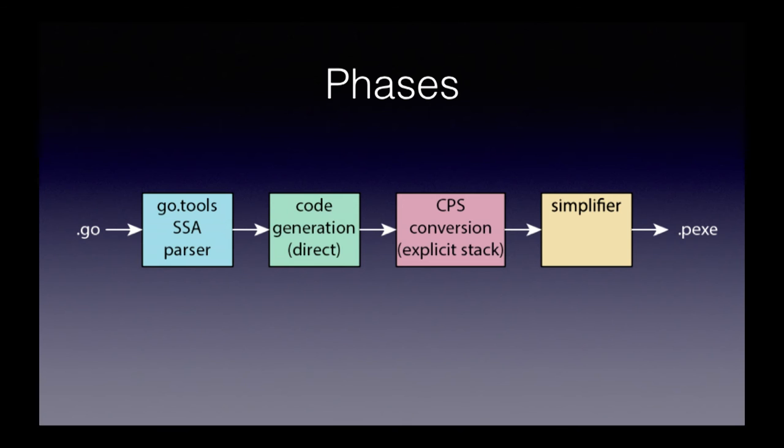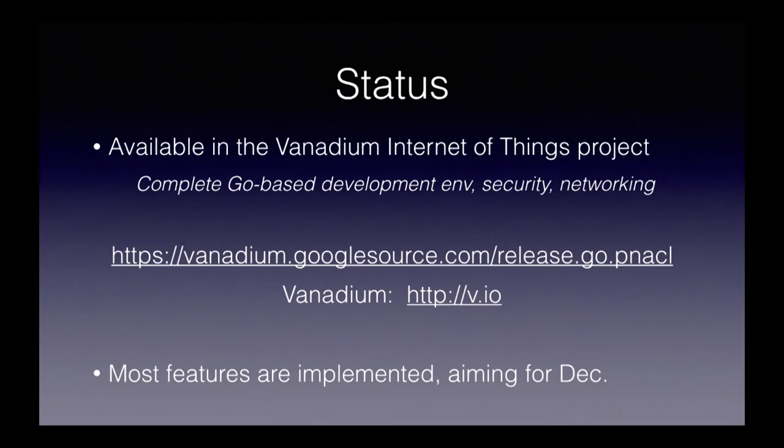The phases of our compiler are like this: we use the SSA GoTools SSA parser to parse the program, generate the code in direct style, then perform a continuation passing style conversion to do this explicit stack transformation, then a simplification, and finally generate the portable code. This is all open source — you can look at it at vanadium.googlesource.com. Vanadium is the title of the project. If you want to look at the Internet of Things project that uses Go throughout to develop an IoT infrastructure, you can look at v.io.